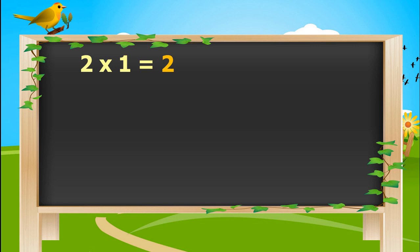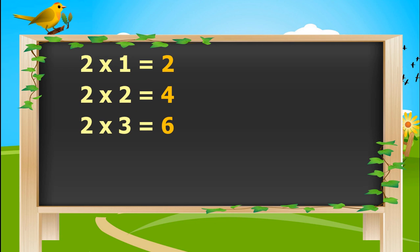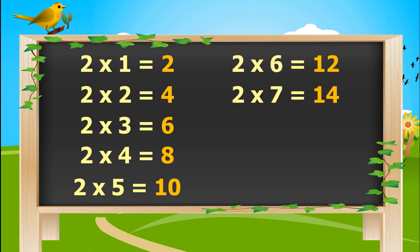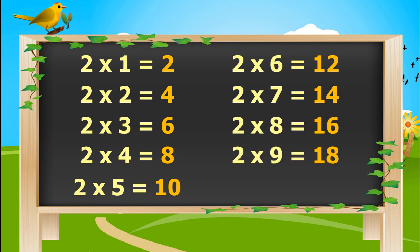2 times 1 is 2. 2 times 2's are 4. 2 times 3's are 6. 2 times 4's are 8. 2 times 5's are 10. 2 times 6's are 12. 2 times 7's are 14. 2 times 8's are 16. 2 times 9's are 18. 2 times 10's are 20.